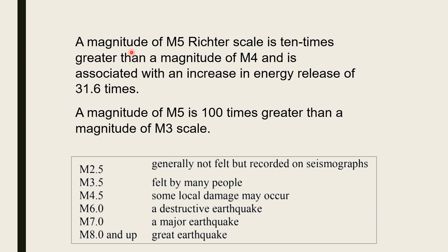You may have heard of M5 or M7 earthquakes. As per the Richter scale, a magnitude of M5 is 10 times greater than M4 and associated with 31.6 times more energy release. An M2.5 earthquake is generally not felt but recorded on seismographs; M4.5 causes some local damage; M6 is destructive; M7 is a major earthquake; M8 and above causes large-scale destruction.